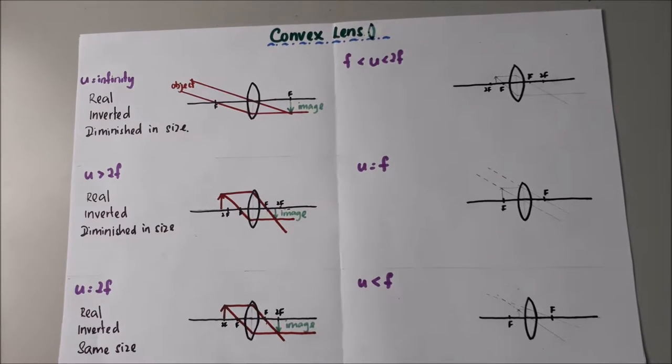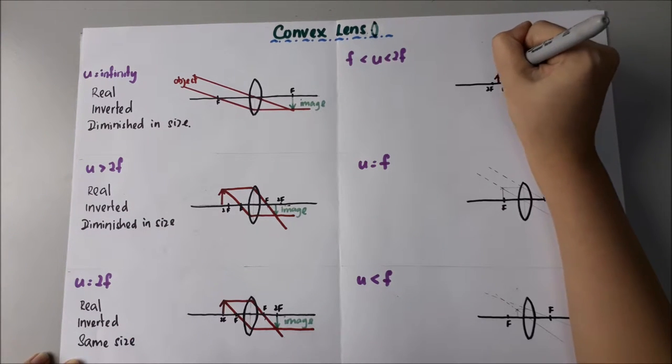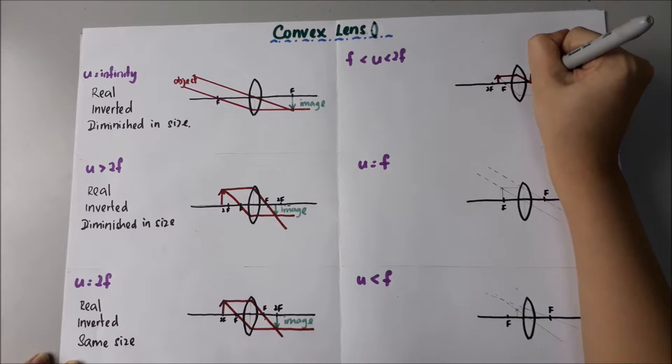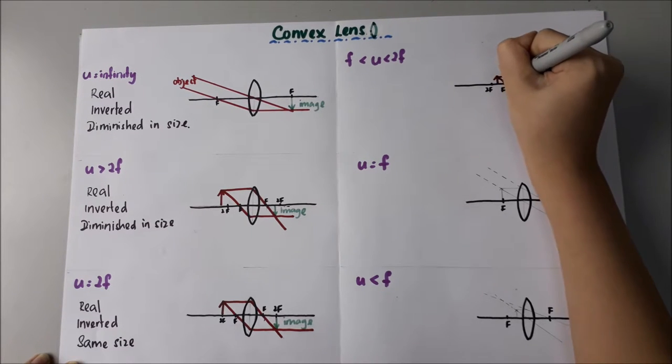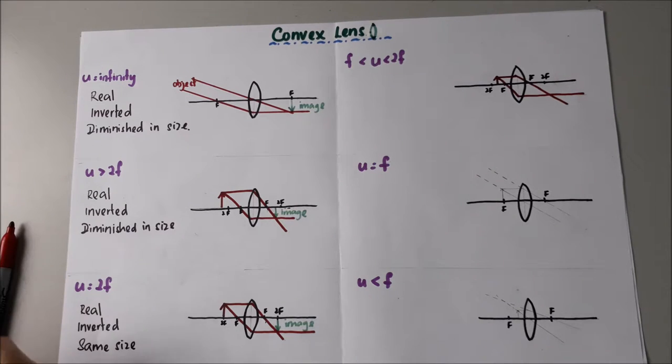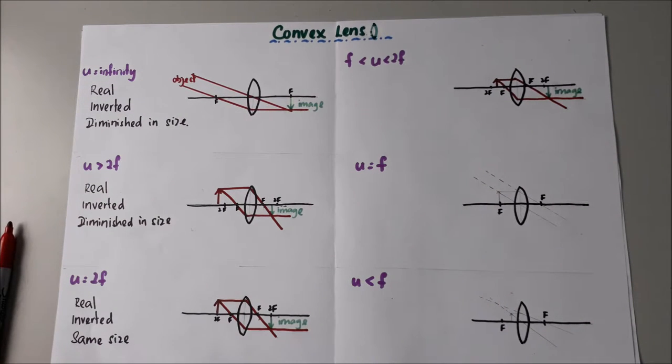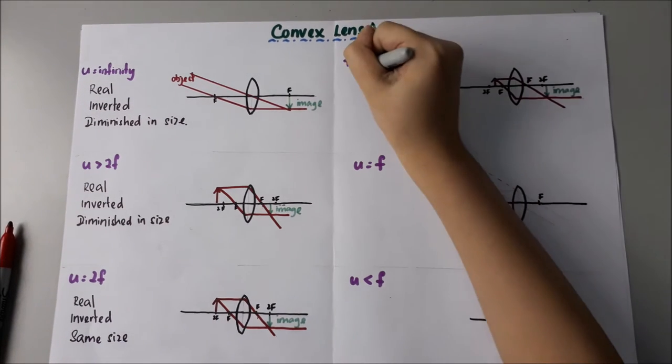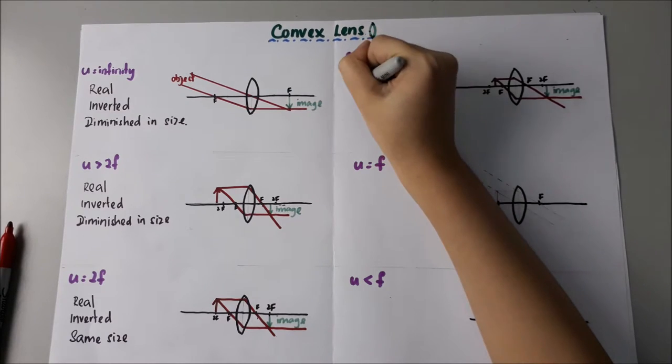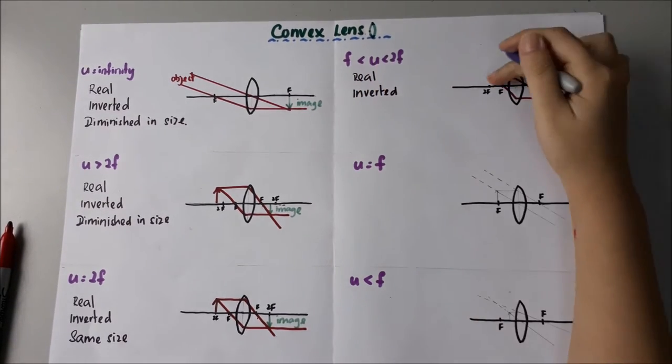Now, what happens if the object is between F and 2F? From this, we can see that the image is real, inverted, and...